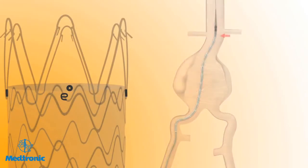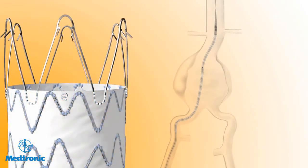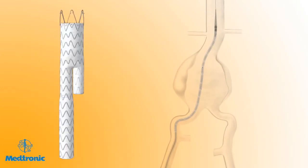There are four radiopaque markers at the proximal end of the stent graft fabric. The edge of the graft fabric is 1 mm above the top edge of the radiopaque markers. Adjust the position of the bifurcated stent graft such that the top edge of the graft fabric is just below the lowest renal artery.